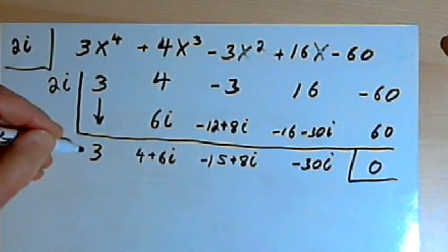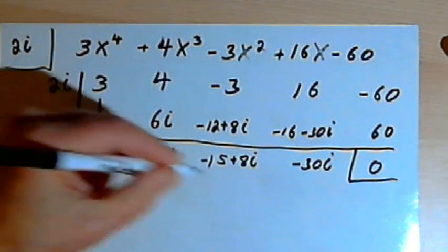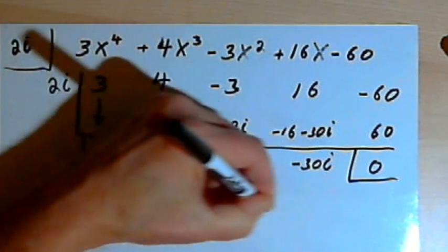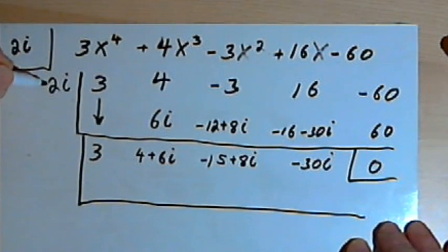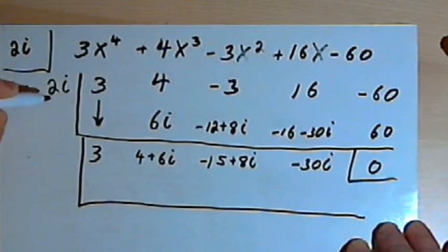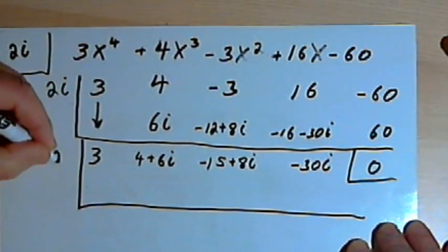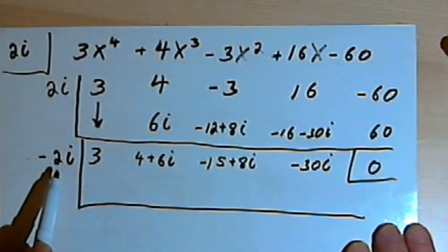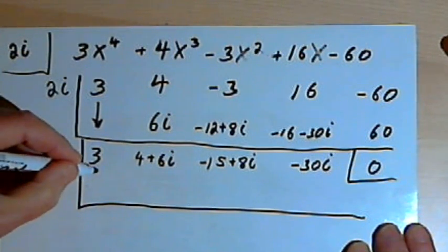Okay, now, I'm going to take what I've got here, the series of complex numbers, and divide that again. Remember, when you're dealing with imaginary numbers as zeros of a function, they come in pairs, in positive and negative pairs. So if 2i was one of the zeros, then negative 2i also has to be a zero. So I'm going to take the answer I just got and divide that by negative 2i. I'll begin the process again. Bring down the 3.